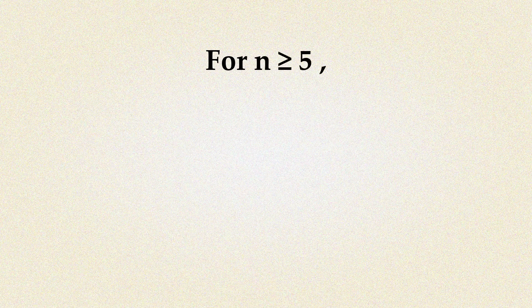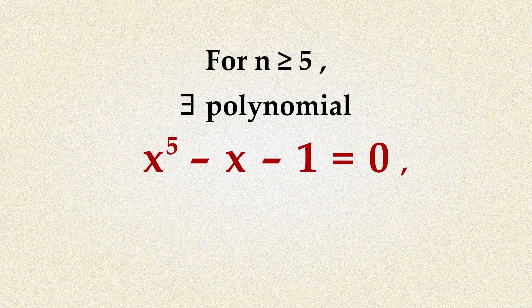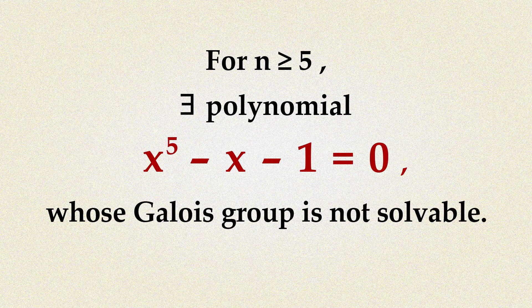For n greater than or equal to 5, there exists polynomial x to the 5th minus x minus 1 equals 0, whose Galois group is not solvable.